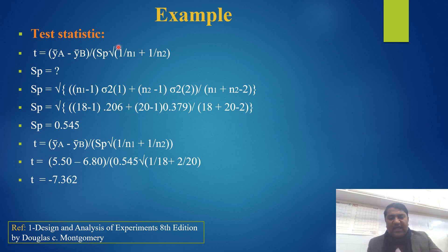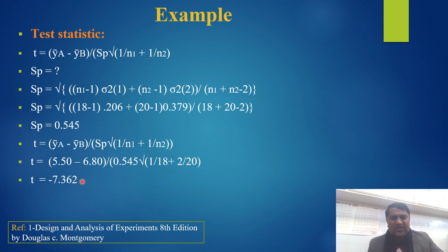Next are the test statistics. The formula uses Sp, the pooled sample variance, which you calculate using the given formula. Putting in the values, Sp equals 0.545. Then the t-value is calculated by substituting the numerical values into the t-test formula, and it comes out to minus 7.362.